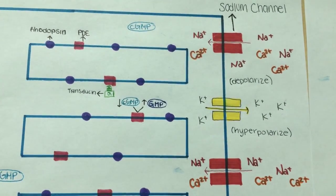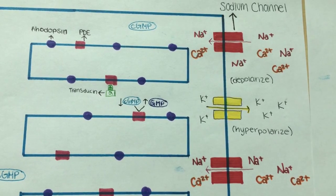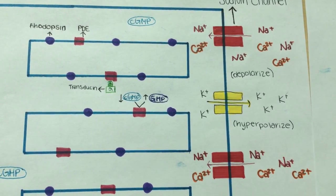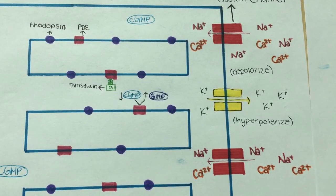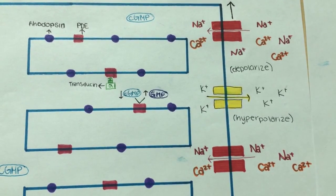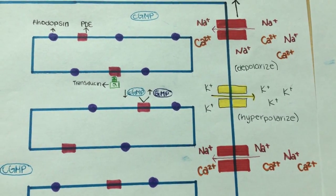The sodium channels then close. In the dark, the sodium ion channels are open, and the inward flow of sodium and calcium ions depolarize the cell. The positively charged potassium ions flow out through potassium channels, which has a negative or hyperpolarizing effect.